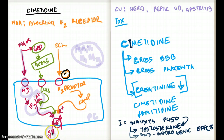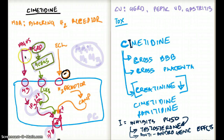The vagus also stimulates the gastrin-releasing peptide, which stimulates the G cells. The G cells then stimulate the CCK-B receptor, and this receptor works through the exact same mechanism as the vagus — producing more IP3, which again stimulates the hydrogen-potassium ATPase.